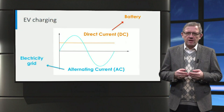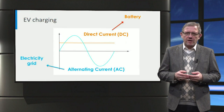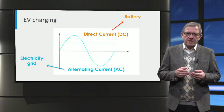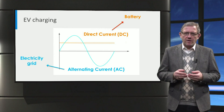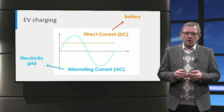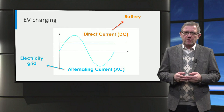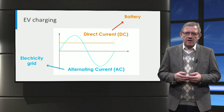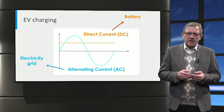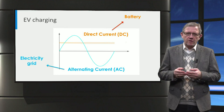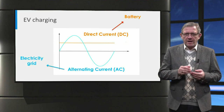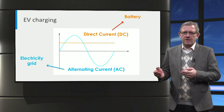In the electricity grid, the electric power is alternating current or AC by nature. However, the electric power of a battery is direct current or DC by nature. Hence, to charge an electric car from the AC grid, the power has to be converted from AC to DC.